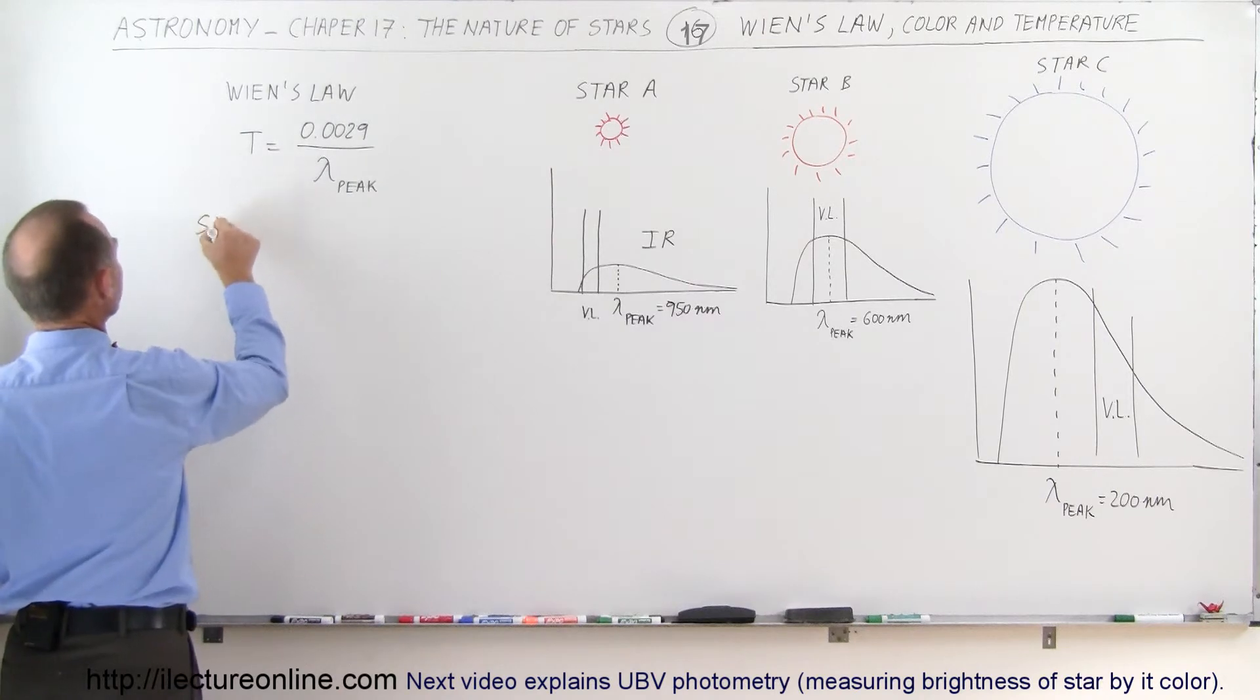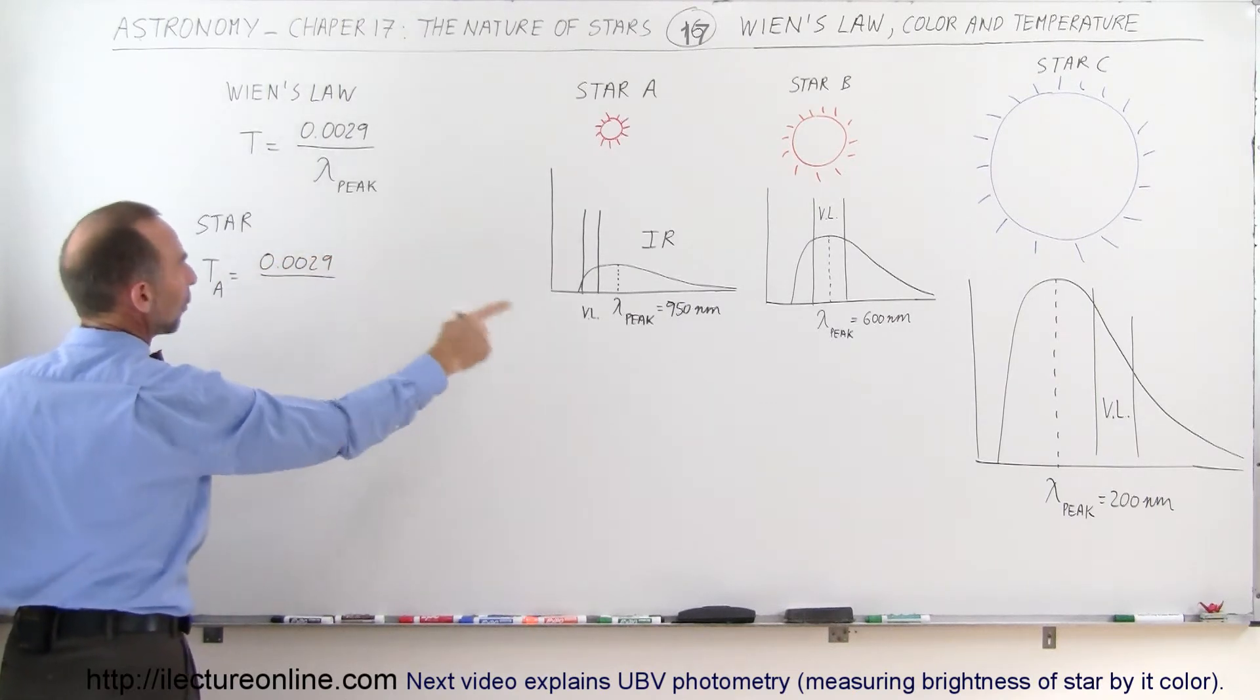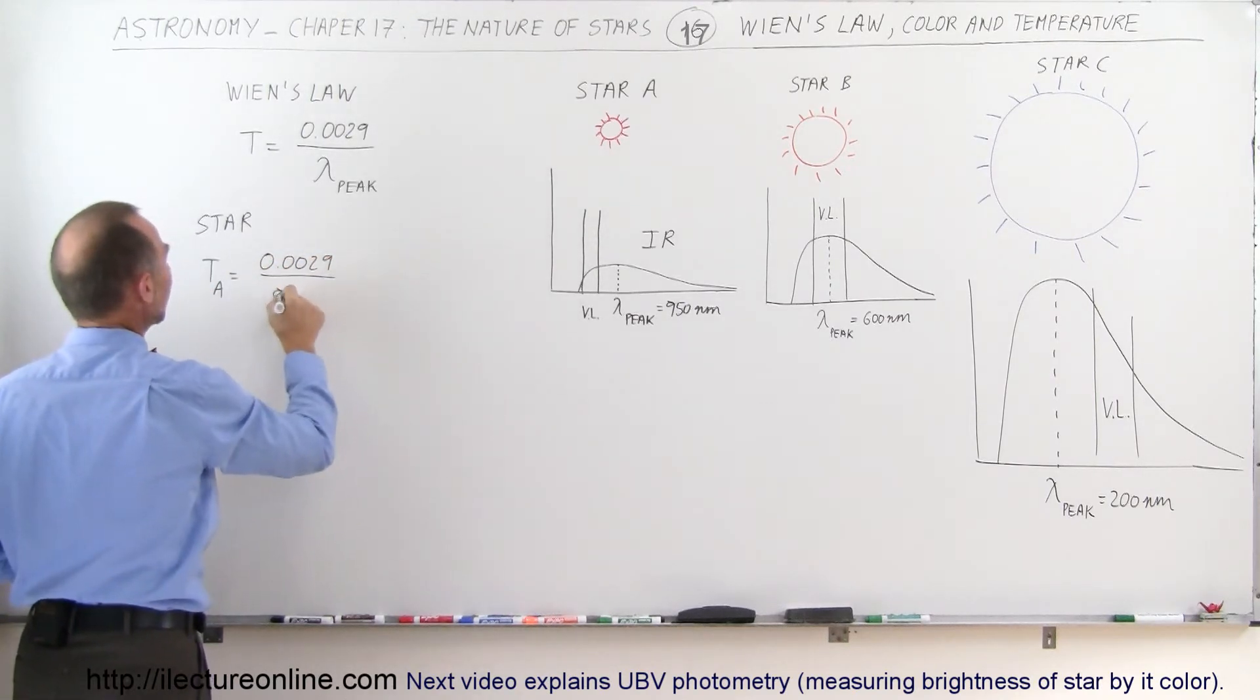Let's try it for Star A. The temperature of Star A is equal to 0.0029 divided by the wavelength, which would be 950 times 10 to the minus 9 meters.